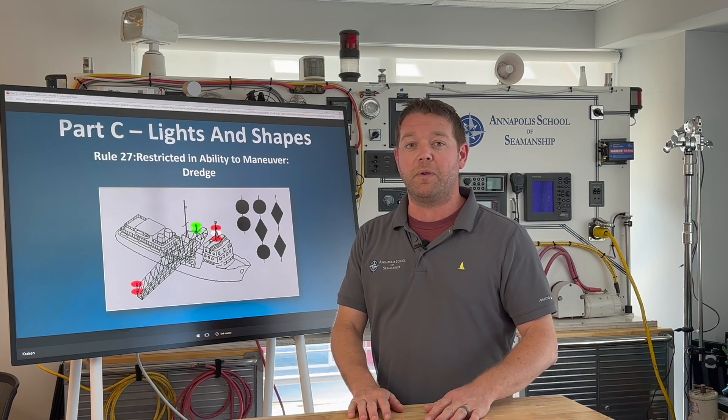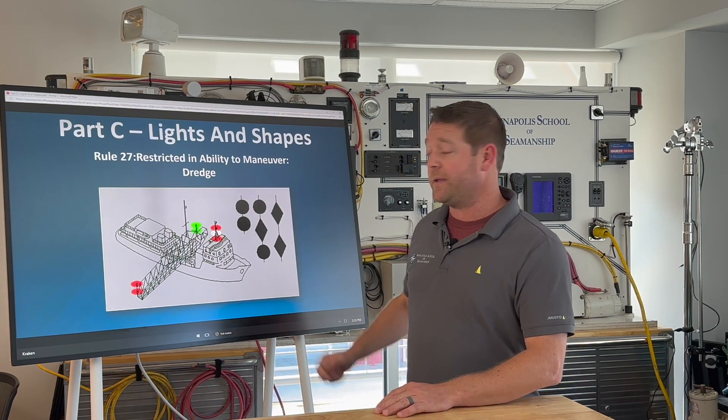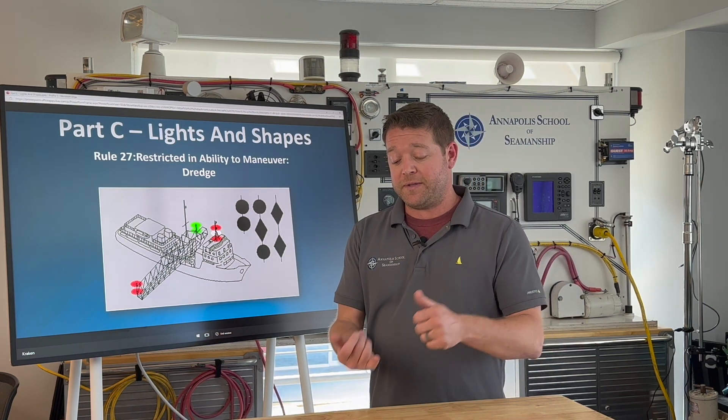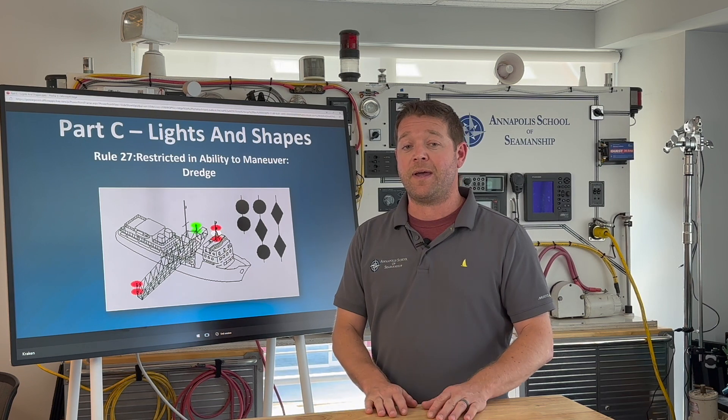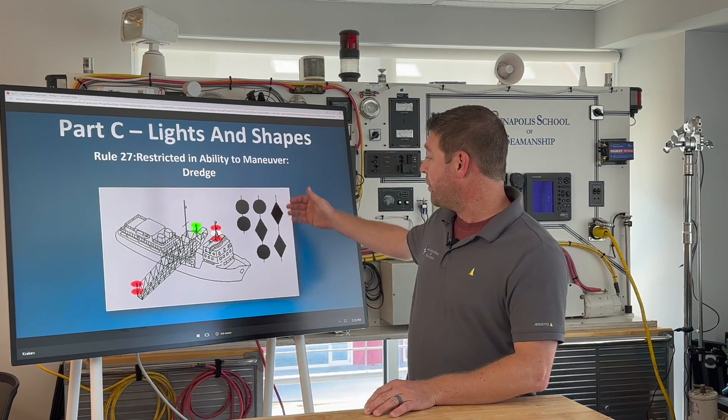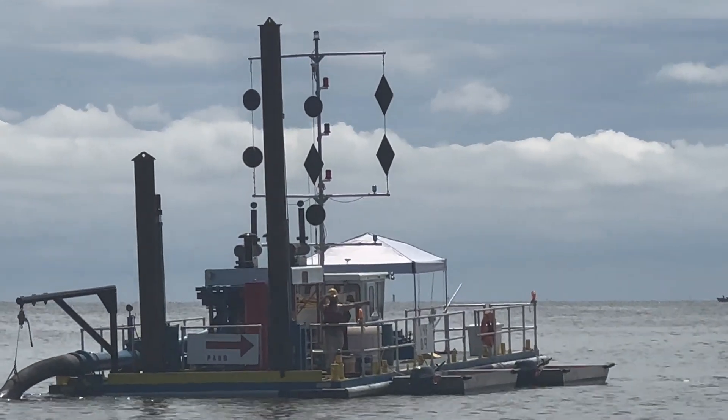But when you also see it with these two black balls and these two black diamonds, all that together tells us it is a dredge. It also tells us which side is the safe side to pass on and approach on, and the safe side to approach and pass on is the side with the two black diamonds. That's what you'll see during the daytime.